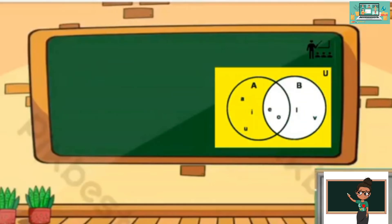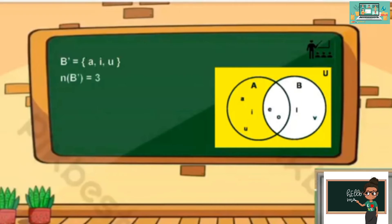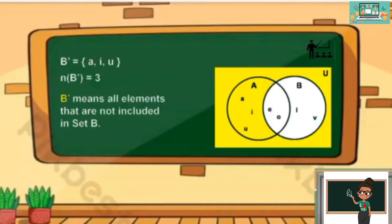How about this one? That is B prime, which consists of elements A, I, and U. The cardinality of B prime is equal to 3. B prime means all elements that are not included in set B.